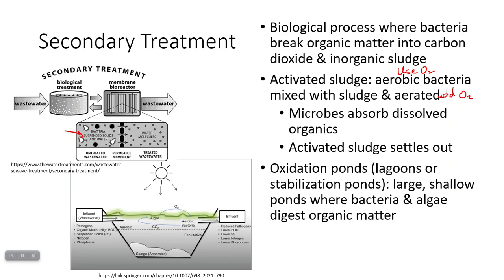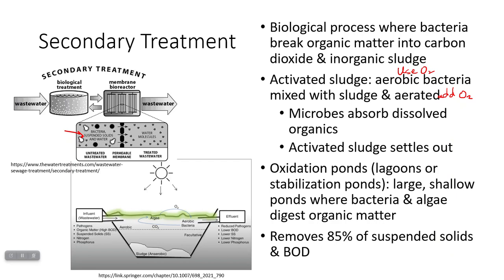An alternative is you can use something called an oxidation pond, a lagoon, or a stabilization pond. These are large, shallow ponds where you let the waste sit. Algae are going to use up the nutrients and bacteria are going to decompose them. This is basically eutrophication, but not in a natural waterway — so it's not going to harm aquatic organisms. This step removes about 85% of the solids suspended in the water and about 85% of the biological material as well.